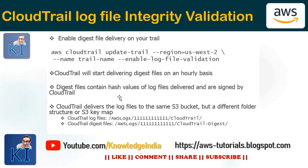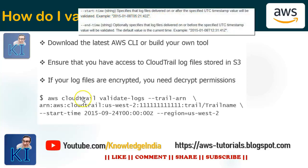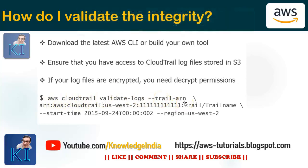If you want to validate the integrity, go to your AWS CLI and execute a command called validate-logs. It's part of the CloudTrail service, so you write: aws cloudtrail validate-logs, and then you specify which trail you want to validate. For example, if you go to your CloudTrail console, this is one of the trails you have created.